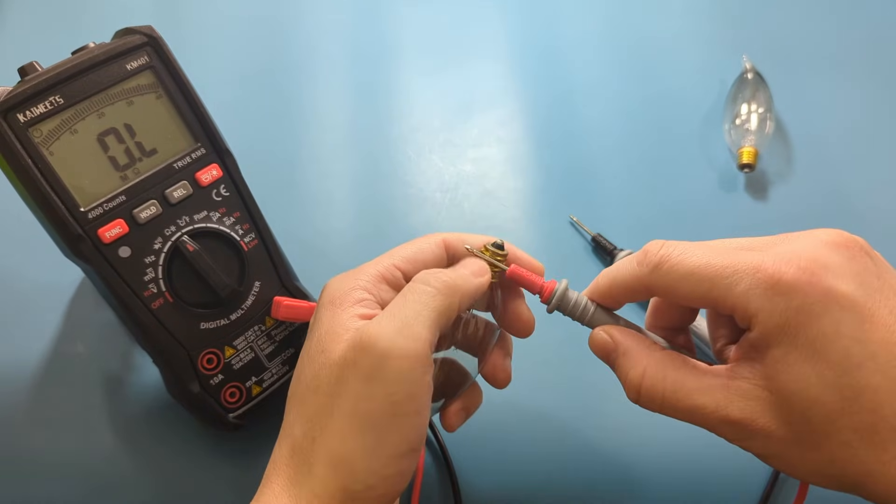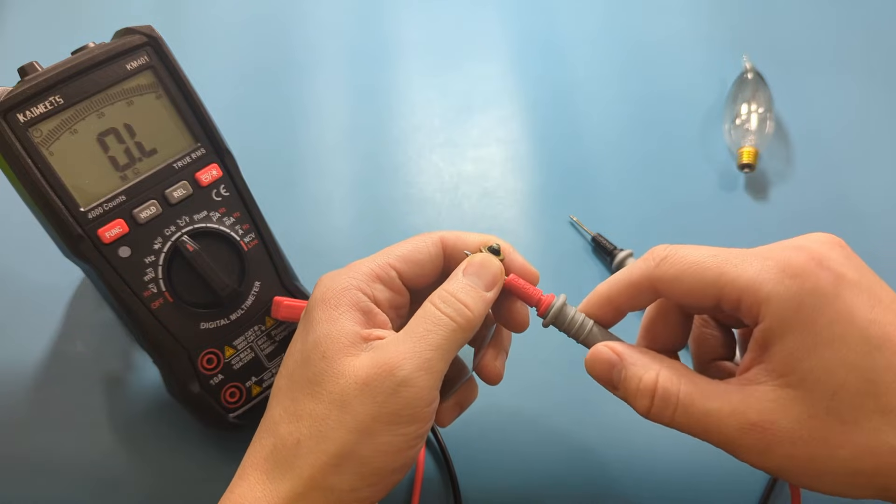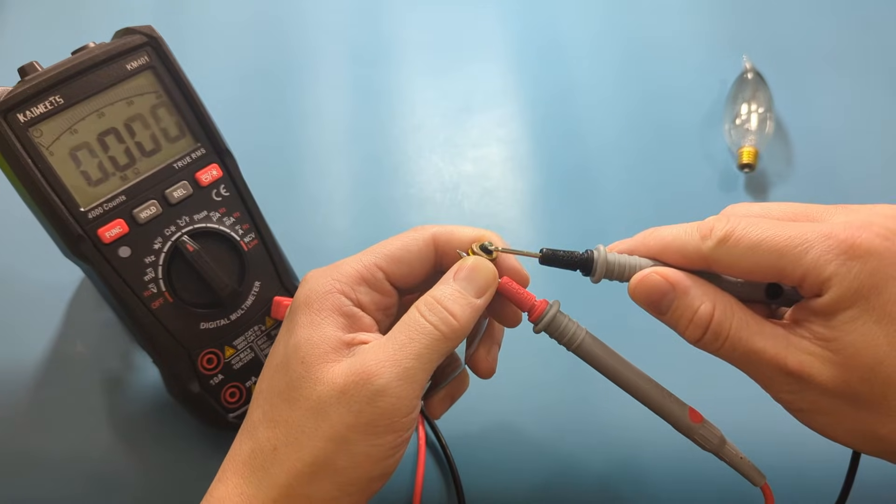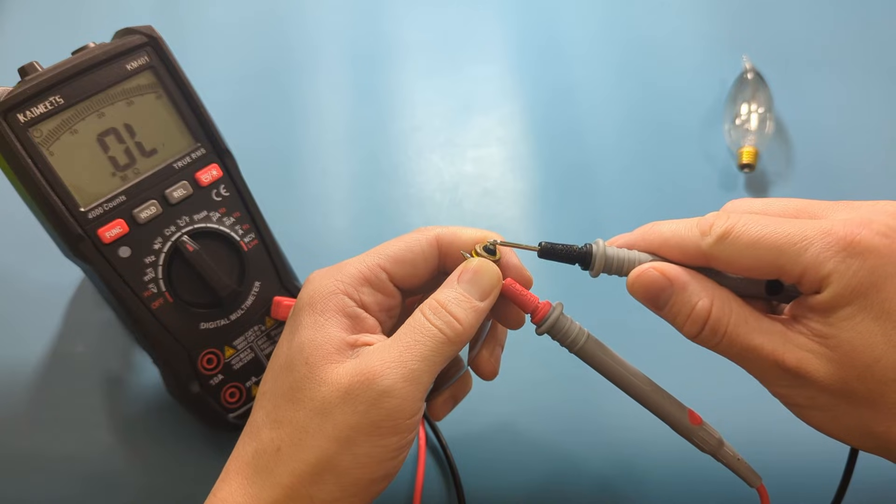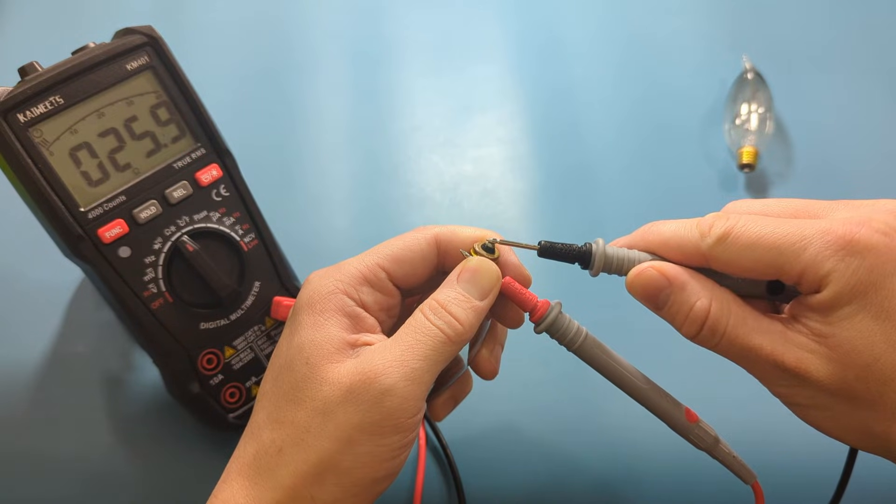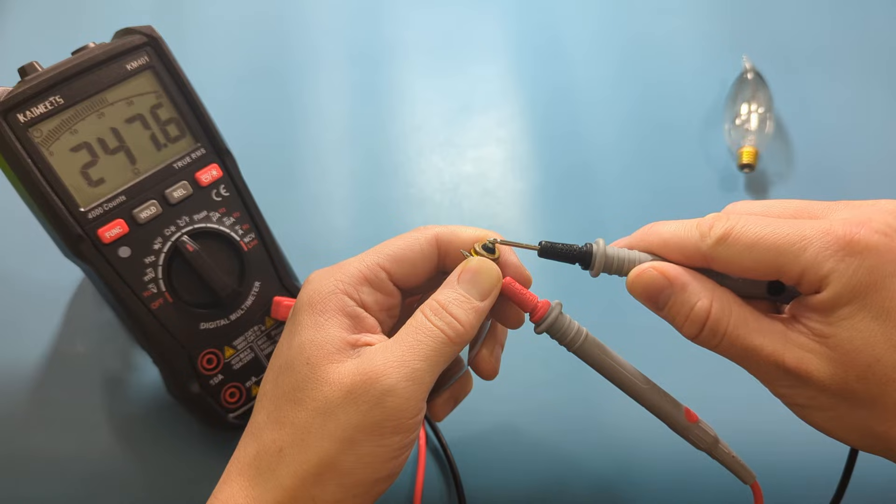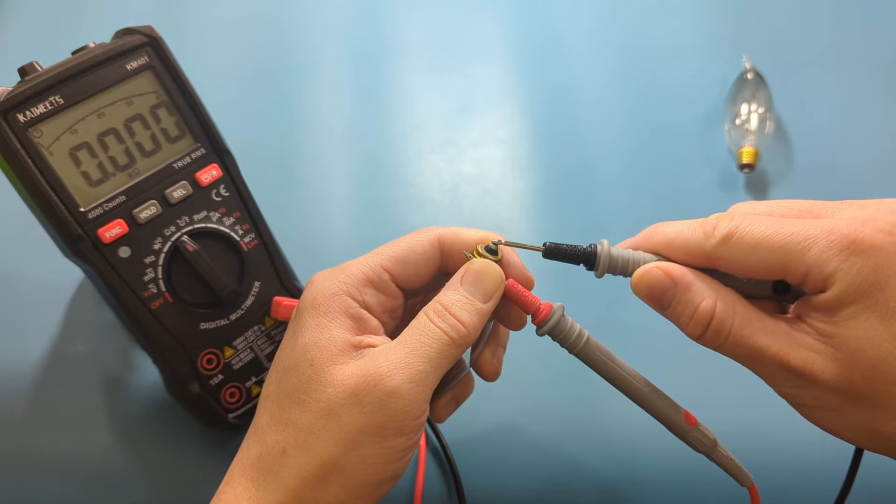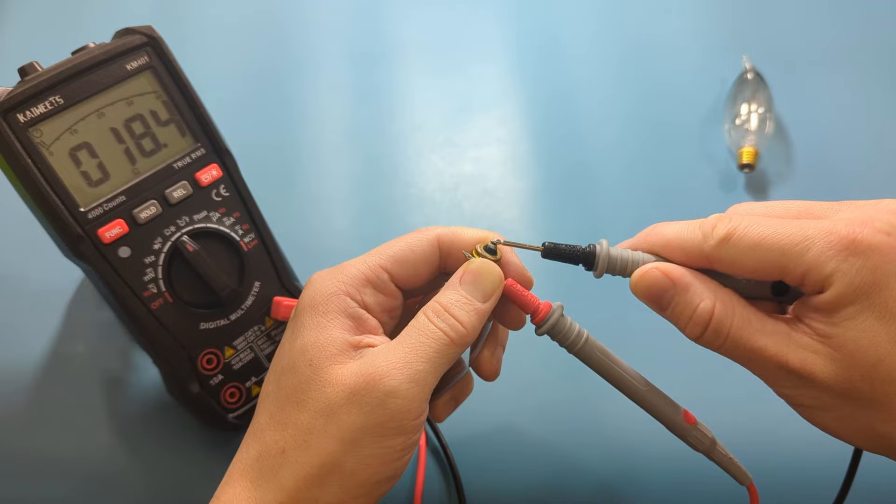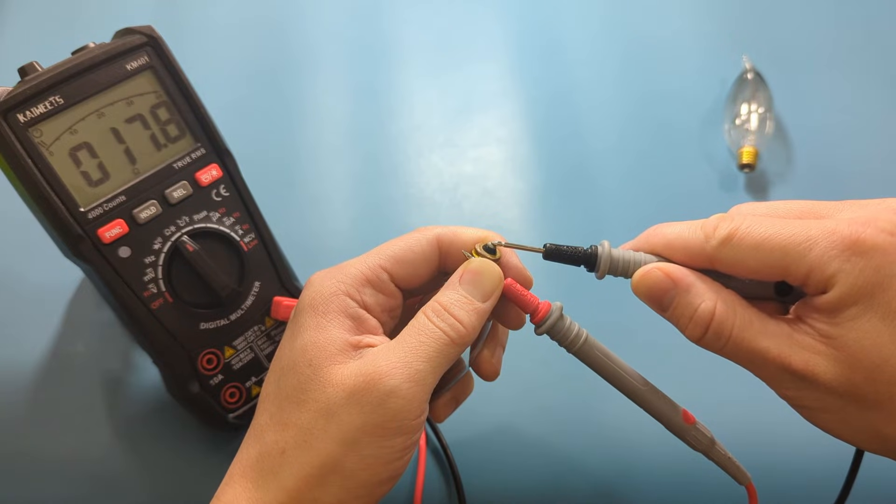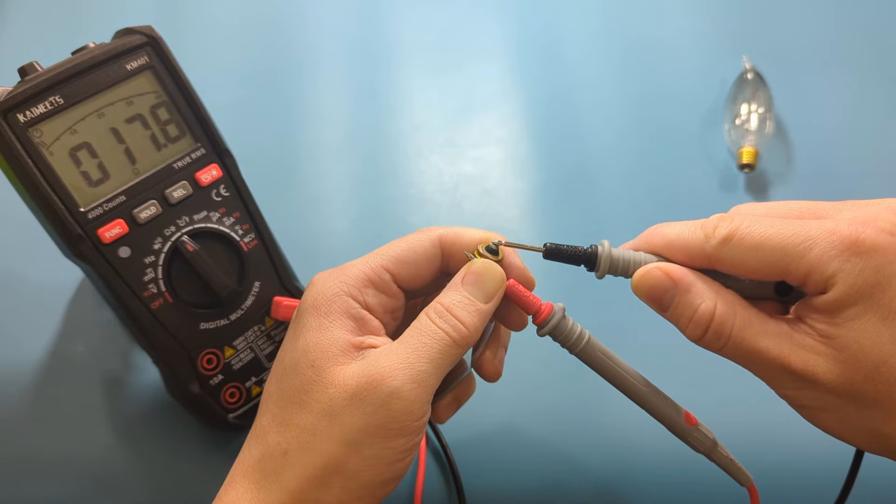Similar to the continuity test, press one of the probe leads to the threads or the screw base. Touch the other probe lead to the tip or the electrical contact end. The light bulb should have a resistance of less than 100 ohms when cold but increases as the temperature rises. We're getting less than 20 ohms. That's acceptable.